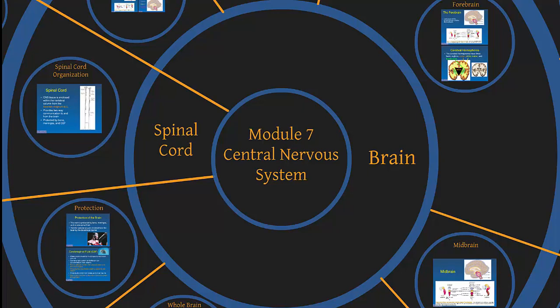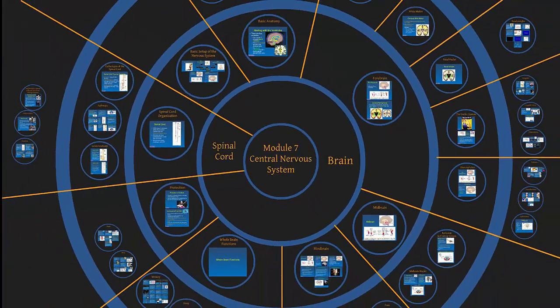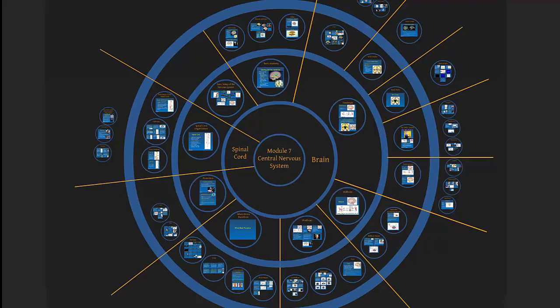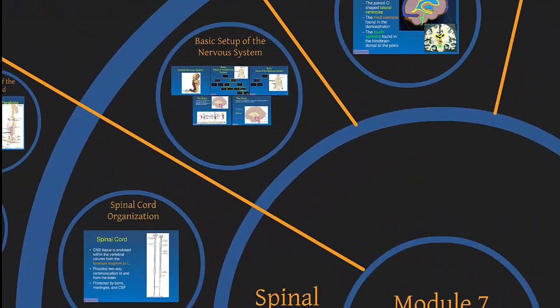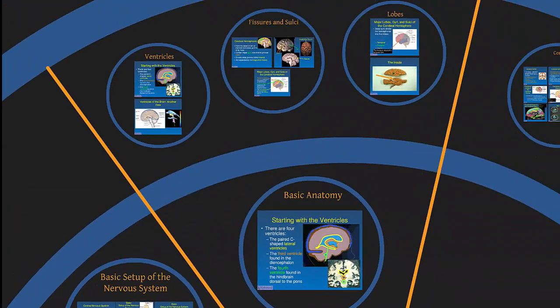Next up for us is module 7, the central nervous system, which is composed of the brain and the spinal cord. Zooming out a little bit, we see there's a whole lot of content here — most of it is brain, very little is spinal cord. Quick overview: basic setup of the nervous system, basic anatomy.